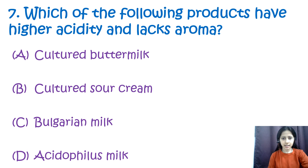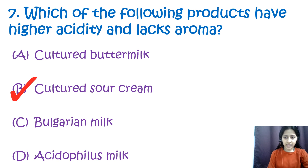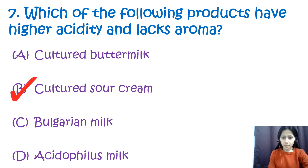Question number seven: which of the following products has higher acidity and lacks aroma? Option A: cultured buttermilk, option B: cultured sour cream, option C: Bulgarian milk, and option D: acidophilus milk. The correct answer is option B, cultured sour cream. Cultured buttermilk has a tangy flavor and aroma; Bulgarian milk is a type of yogurt known for its creamy texture and mild flavor; acidophilus milk is a probiotic known for health benefits and mild aroma.